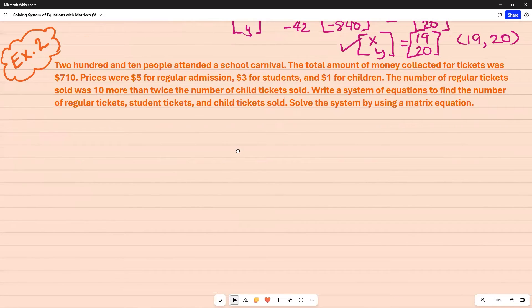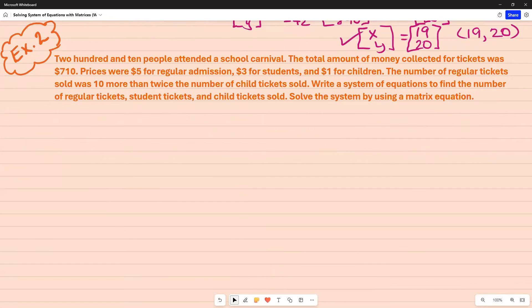Moving on to example two, 210 people attended a school carnival. The total amount of money collected for tickets was $710. Prices were $5 for regular admission, $3 for students, and $1 for children.